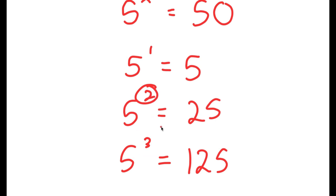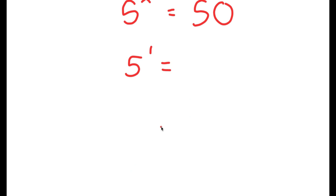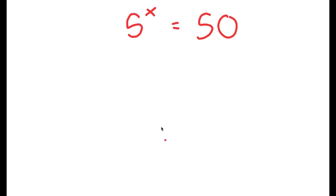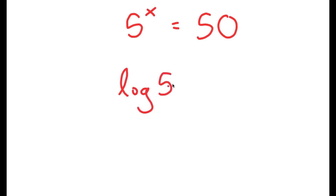So how are we going to find the exact value of x? Well, to start, we're going to be using logarithms. So I'm going to take the log on both sides, so I get log 5 to the power of x is equal to log 50.